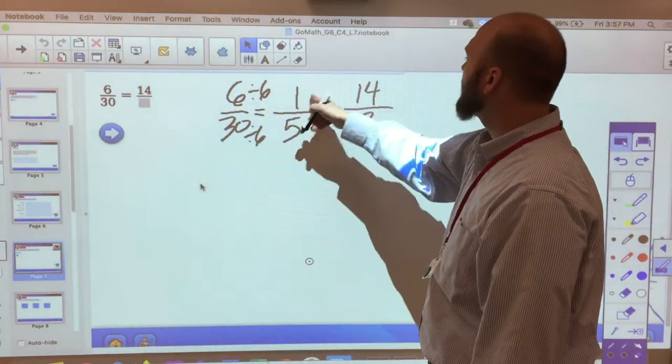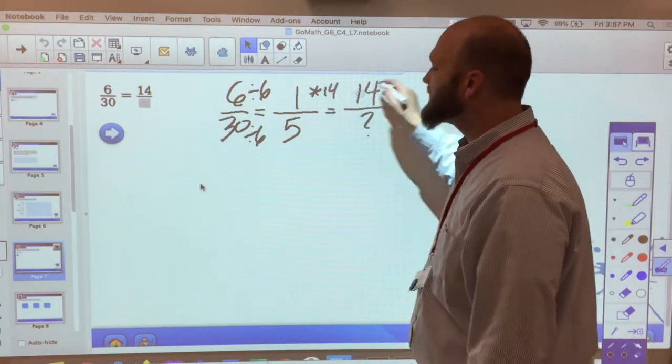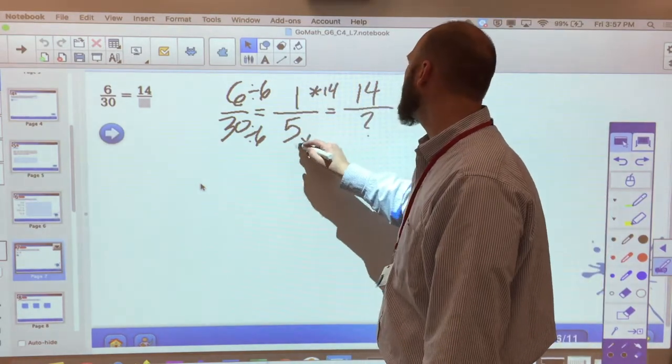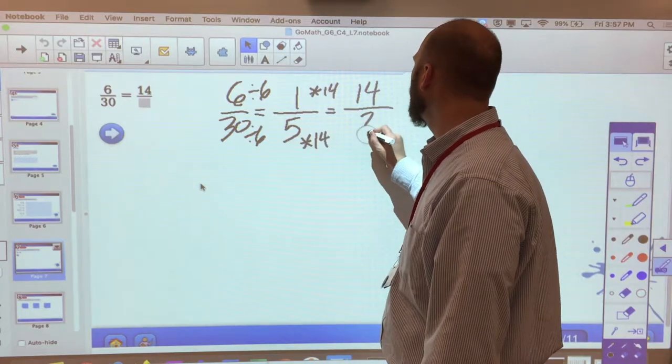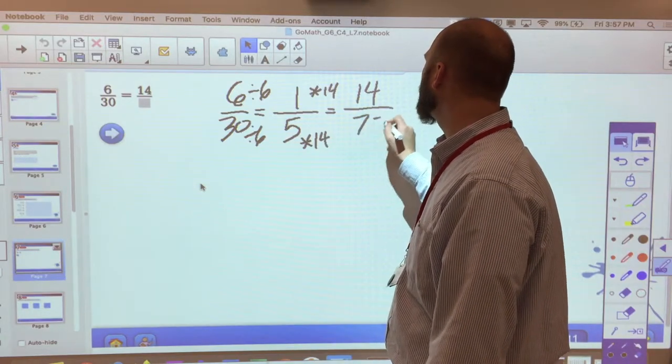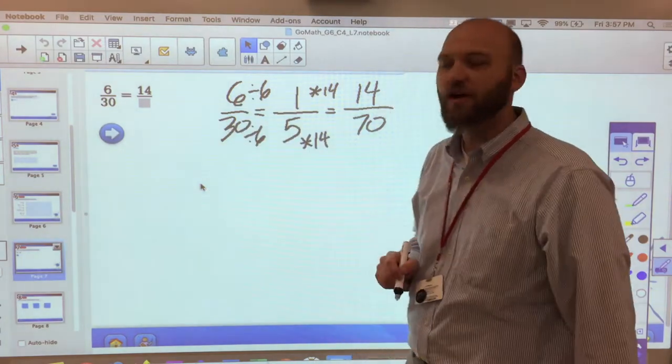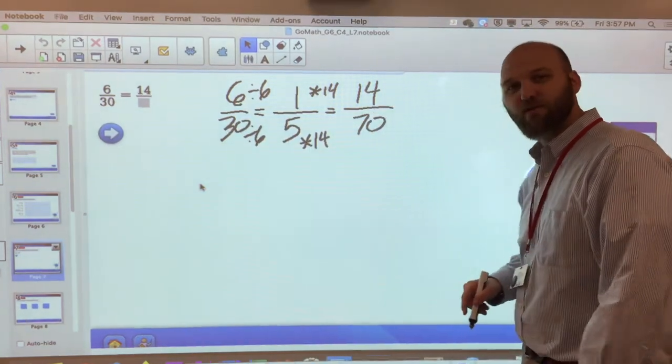So from there I want to go up to 14. I know 1 times 14 equals 14. So 5 times 14 will actually give me 70. So a 6 to 30 ratio is a 14 to 70 ratio.